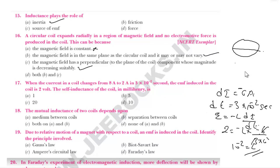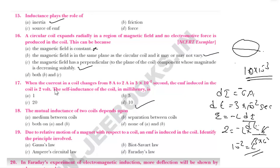We need to write L in millihenry: 10⁻² henry equals 10 millihenry. So the answer is 10 millihenry.